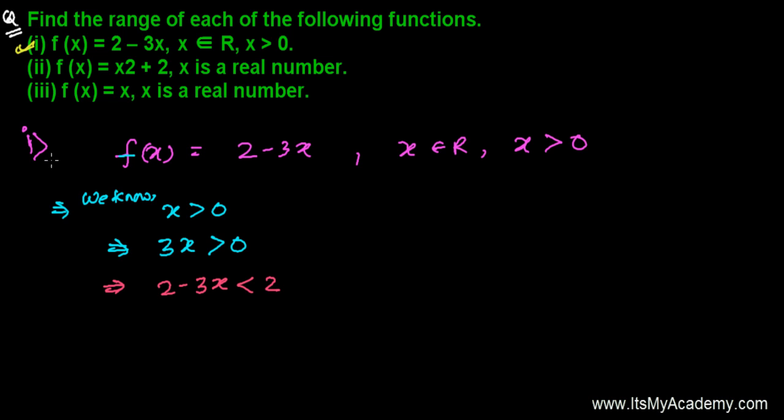And next thing, 2 minus 3x, what is this? The question is saying 2 minus 3x equals f of x. So I can say that now f of x is less than 2. And here is our deal of range.